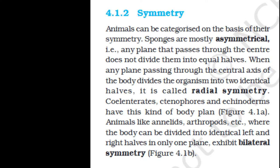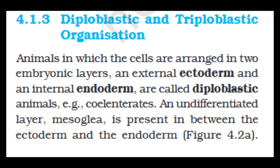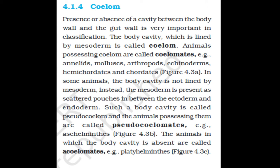Section 4.1.3: Diploblastic and Triploblastic Organization. Animals in which cells are arranged in two embryonic layers — external ectoderm and internal endoderm — are called diploblastic animals; for example, coelenterates. An undifferentiated layer, mesoglea, is present between the ectoderm and endoderm. Those animals in which the developing embryo has a third germinal layer, mesoderm, in between the ectoderm and endoderm are called triploblastic animals — from Platyhelminthes to Chordates.